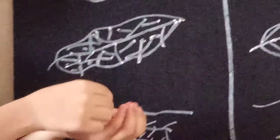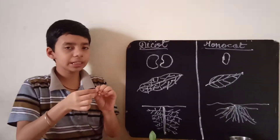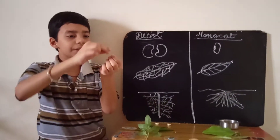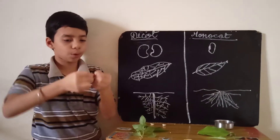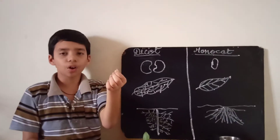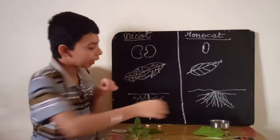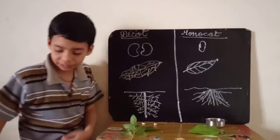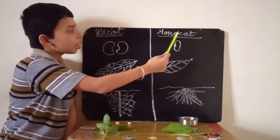See, if I try to divide it, what will happen is it will break and I can't do it. That is because it is a monocotyledon.